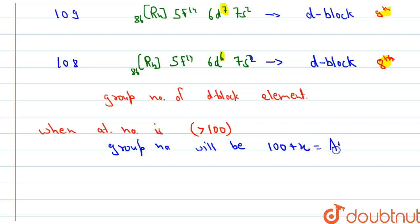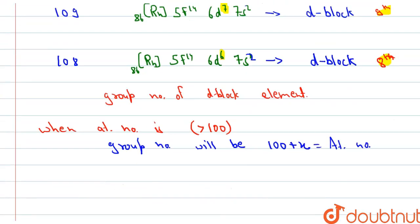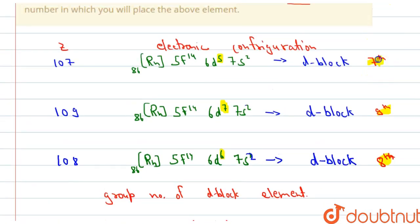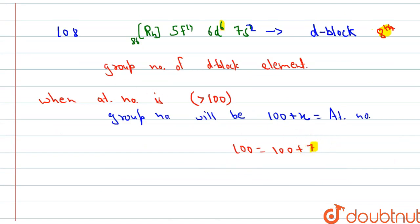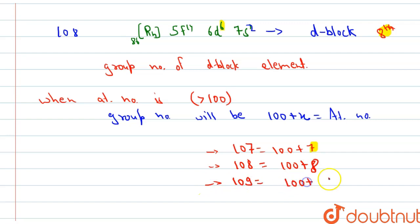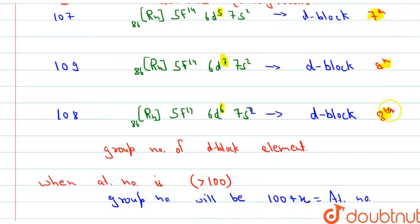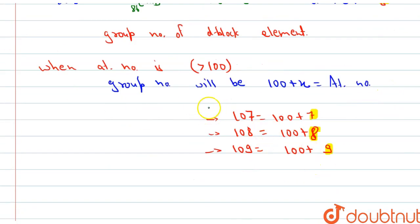For example, 107 = 100 + 7, so the group number is 7 — same as the first method, 7th group. For 108 = 100 + 8, this is an 8th group element. For 109 = 100 + 9, this is a 9th group element. So the answers are: Z=107 is a 7th group element, Z=108 is an 8th group element, and Z=109 is a 9th group element. This is the second method to solve these types of questions.